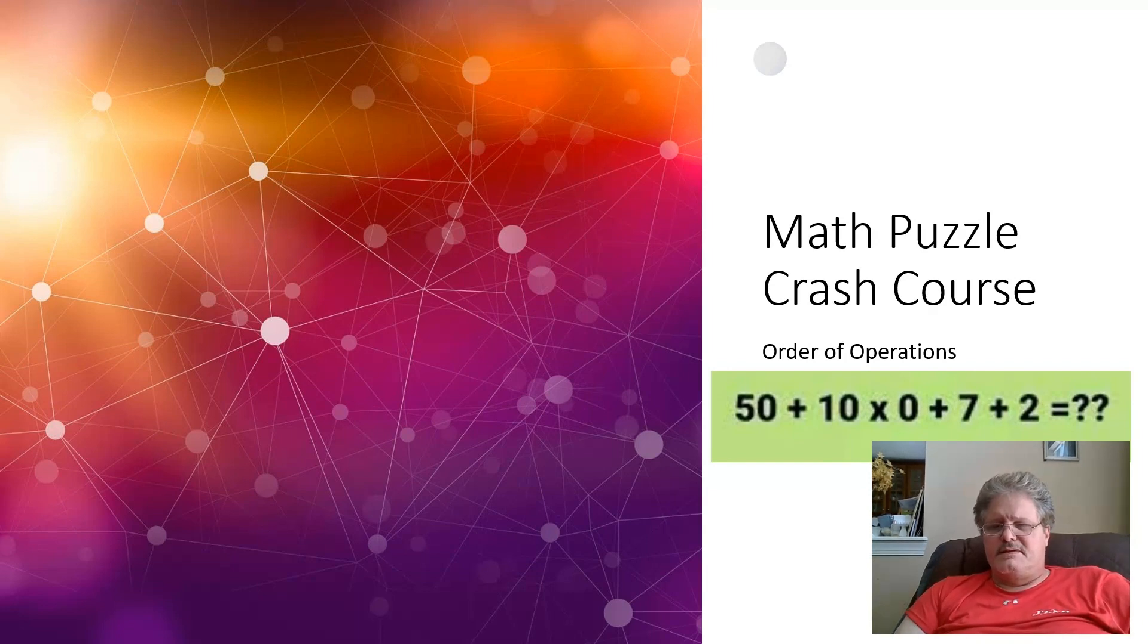They're just solving left to right, and a few others are getting the answer of 69. A lot of people are confused, I think, on multiplying by zero.